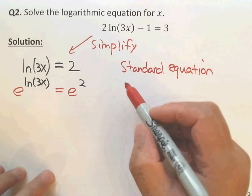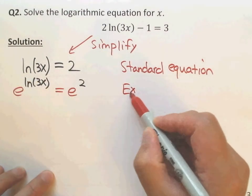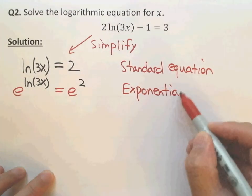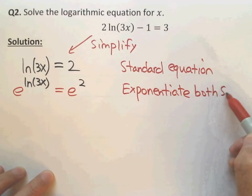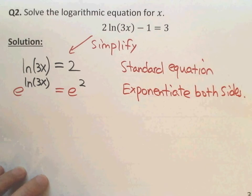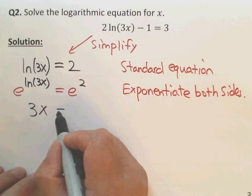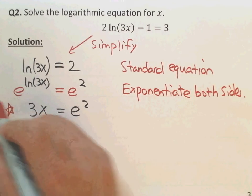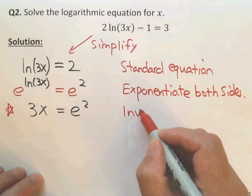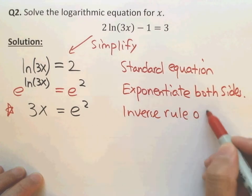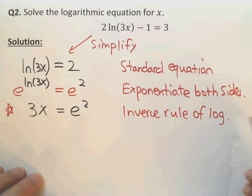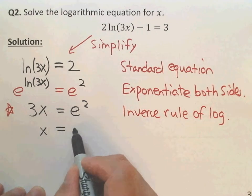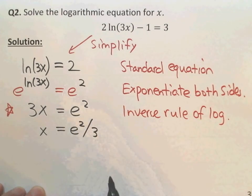This step is very important — we call it exponentiating both sides. Using the inverse rule, the left becomes 3x and the right is e squared. This is the key inverse rule of log. Since 3x equals e squared, you divide both sides by 3, and x equals e squared divided by 3.